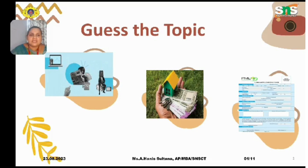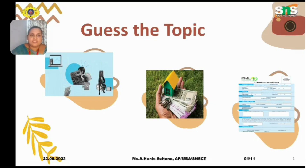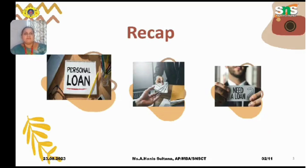Looking at the slide pictures from a student's point of view, we can guess the topic. One picture shows a person with a small house, money, and a key. Another picture shows a loan application form where KYC — know your client — details have to be filled in. From these pictures we can clearly see the topic we are going to cover. To recap, we have seen the definition of a loan and the need for a loan.